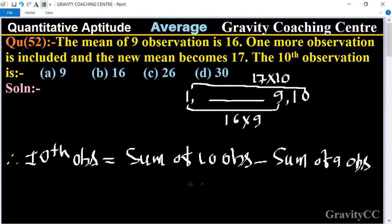Sum of 10 observations is 17 into 10. Sum of 9 observations means 16 into 9, equal to 170 minus 144.